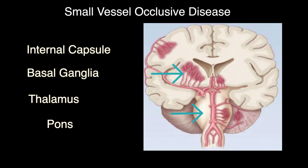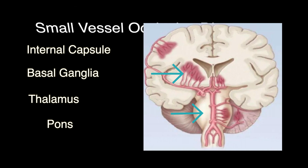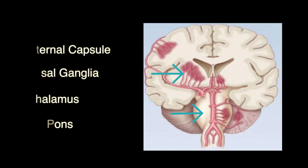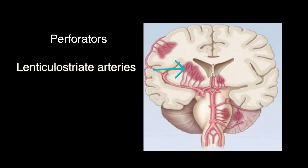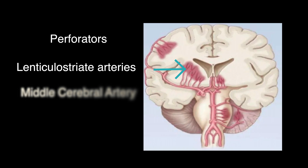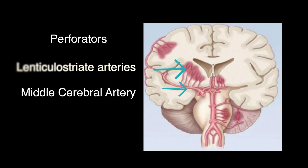The reason is that these areas are supplied by small arteries that branch off of large arteries, generally known as perforators. For example, we have the lenticulostriate arteries coming off of the middle cerebral artery, perforating into the basal ganglia and internal capsule.